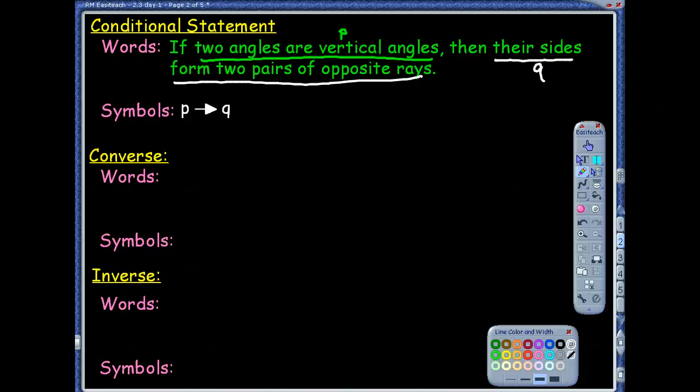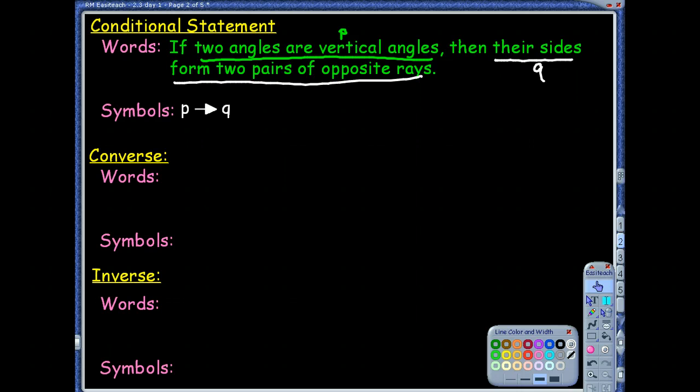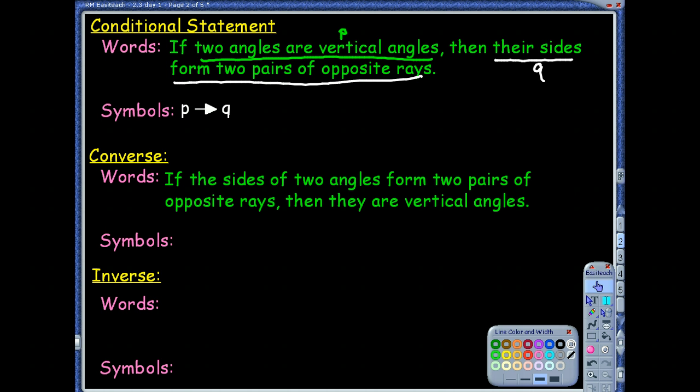Now, we've written converses before. Let's talk about the converse. If I flip the order here, what would this look like? Let me think, how would that word? Sometimes when you have that pronoun, you've got to think about it. What is it talking about? Vertical angles wasn't even in the conclusion. So if two angle sides form two pairs of opposite rays, then they are vertical angles. So if the sides of two angles form two pairs of opposite rays, then they are vertical angles.